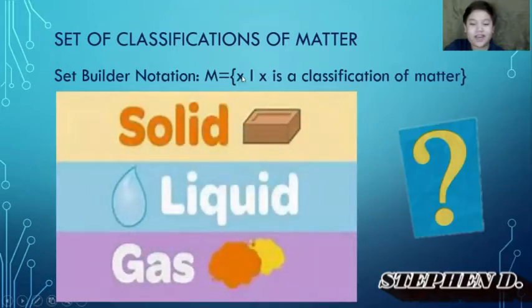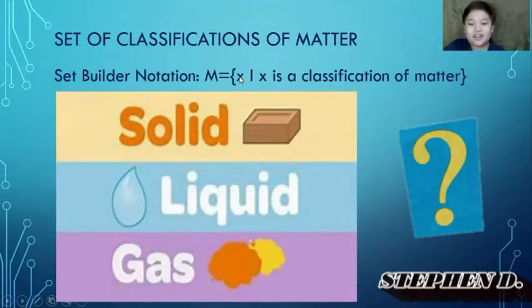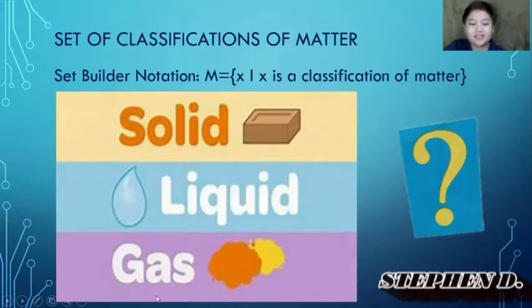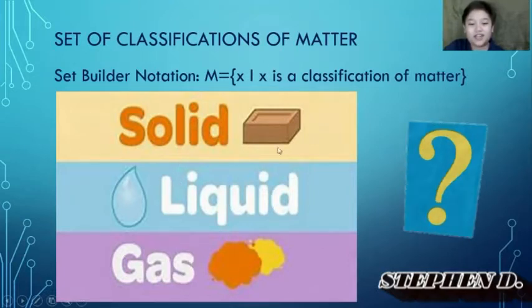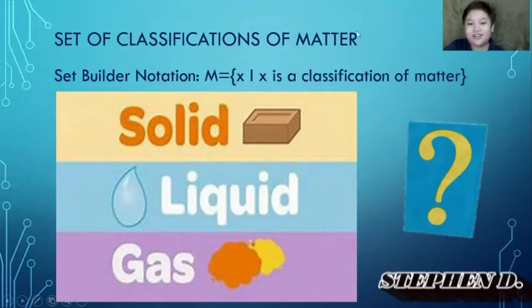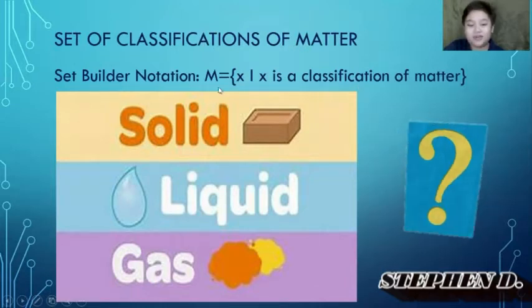Here, x is represented by solid, liquid, and gas, which are classifications of matter. This is how you write it in set builder notation.